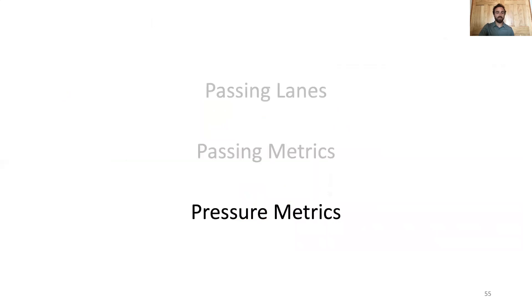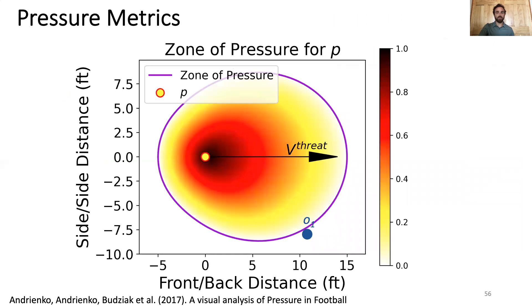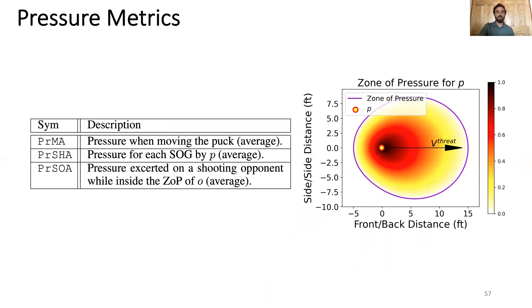Finally, we discuss our pressure metrics. This is the zone of pressure, inspired by concepts in European football, with modifications for ice hockey to consider the smaller playing surface and compact player formations. The main idea is that the pressure on P builds as an opponent moves closer to them. We derive three metrics using pressure: PRMA, the average pressure when a player moves the puck; PRSHA, the average pressure a player is under when they get a shot on goal; and PRSOA, the average pressure exerted on a shooting opponent when inside that opponent's zone of pressure — an important concept as a defender in ice hockey.